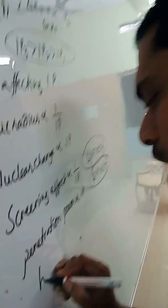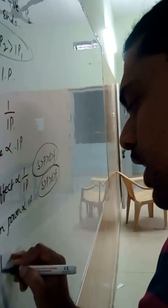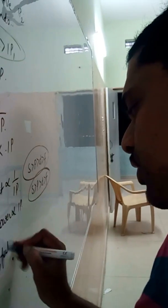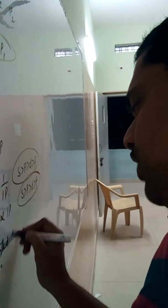Another factor is half-filled and fully-filled electronic configurations, which are directly proportional to ionization potential. Examples include chromium, copper, nitrogen, and beryllium. When an atom has a half-filled or fully-filled configuration, it is extra stable and does not want to lose electrons, because losing electrons would destroy that stability.